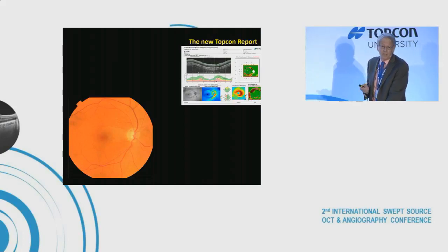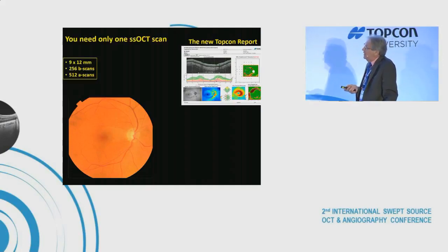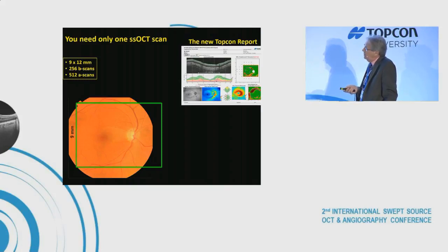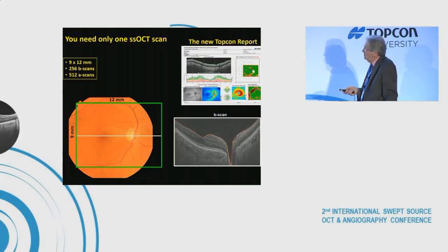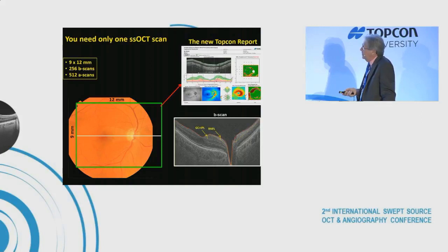Because swept source is so fast, we can now do all of that with a single scan. The scan we use is 9 by 12 millimeters — a wide field scan available on the Triton and Maestro. It has 256 B-scans, with the B-scan through the fovea showing the ganglion cell plus inner plexiform layer and retinal nerve fiber layer, with 512 A-scans per B-scan.